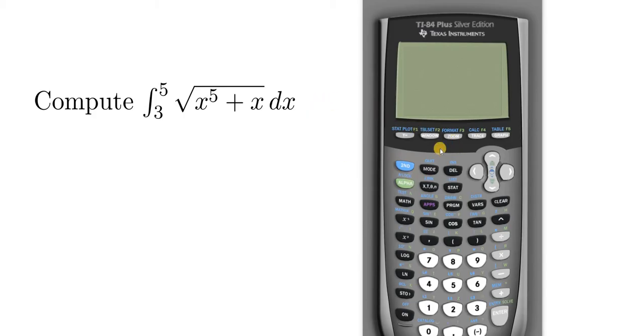So the first way to do it is to click the math button, and this is probably the easiest way. So you want to click on where it says math.